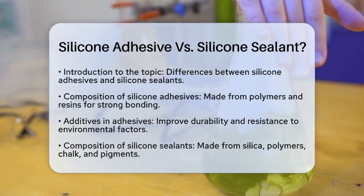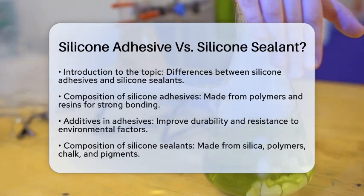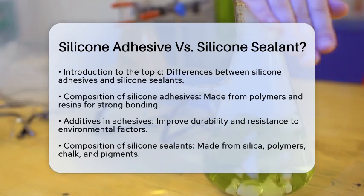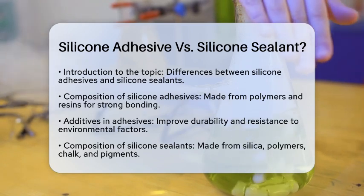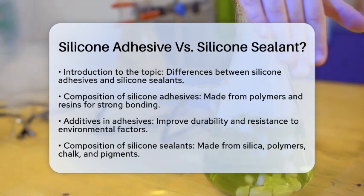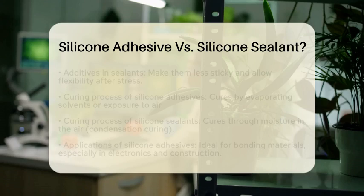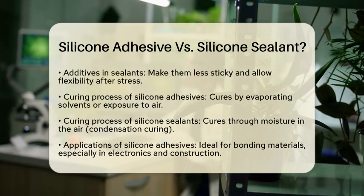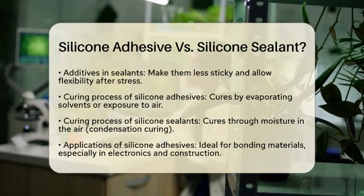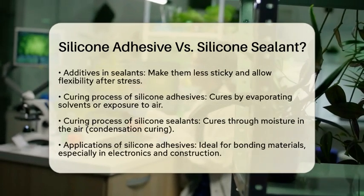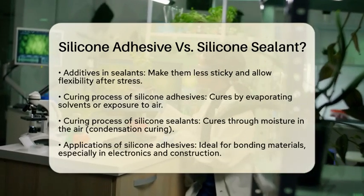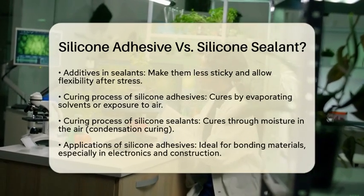On the other hand, silicone sealants are made using silica and polymers, along with other materials like chalk and pigments. These additives make sealants less sticky, allowing them to be flexible and return to their original shape after stress.